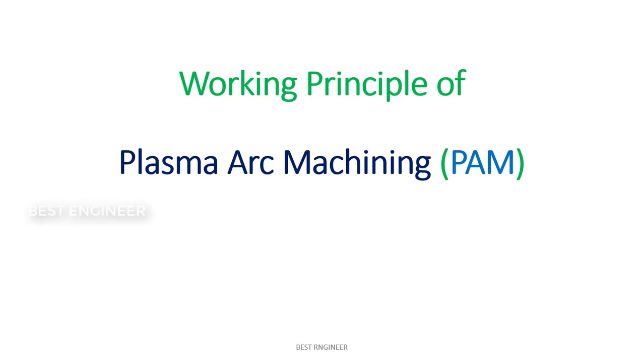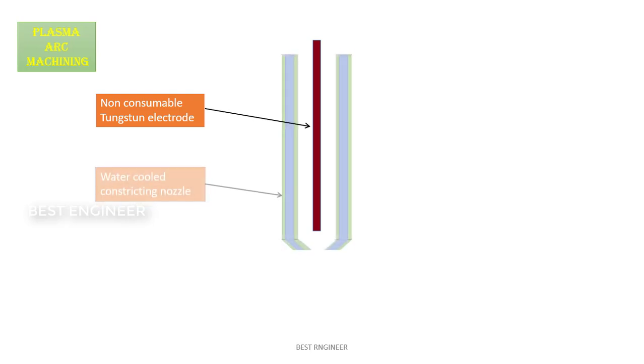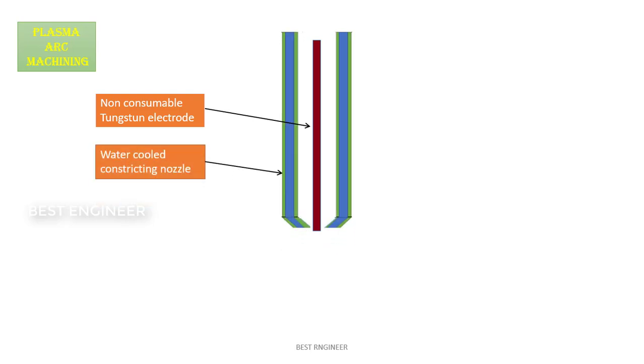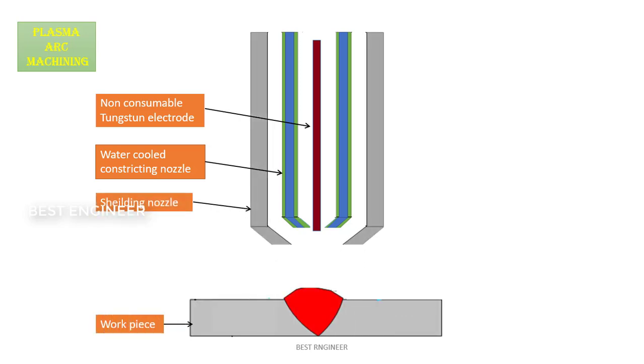Hi, let me show you the working principle of plasma arc machining. These are the important parts: non-consumable tungsten electrode. This electrode will be covered by a water-cooled constricting nozzle, and this nozzle is covered by a shielding gas, along with the workpiece.